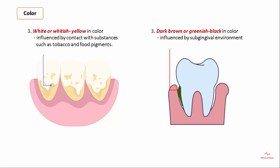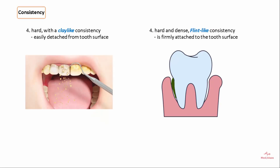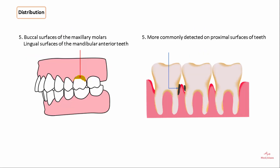In terms of consistency, supragingival calculus is hard with a clay-like consistency and is easily detached from the tooth surface. Subgingival calculus, however, is hard and dense with a flint-like consistency and is firmly attached to the tooth surface.